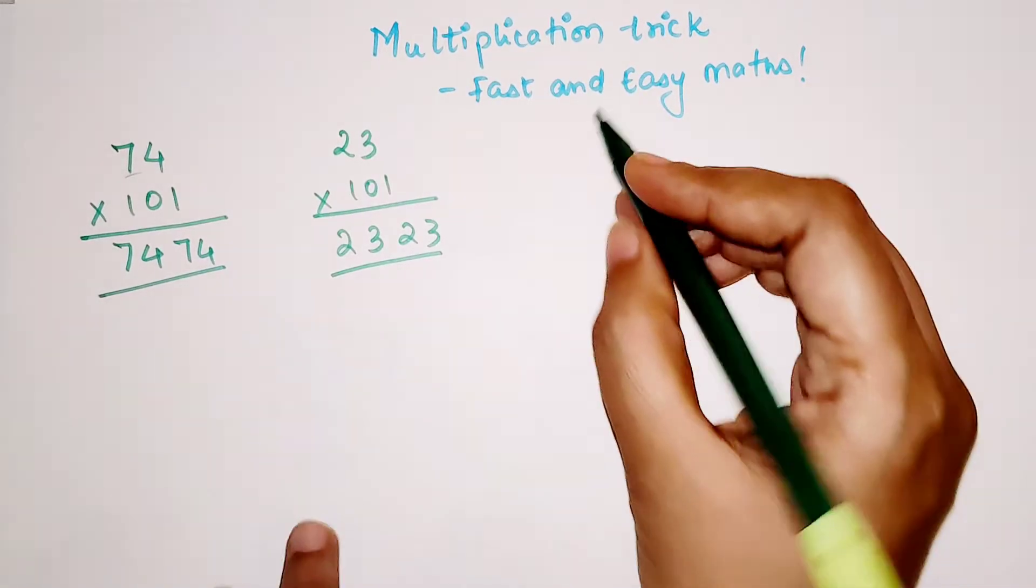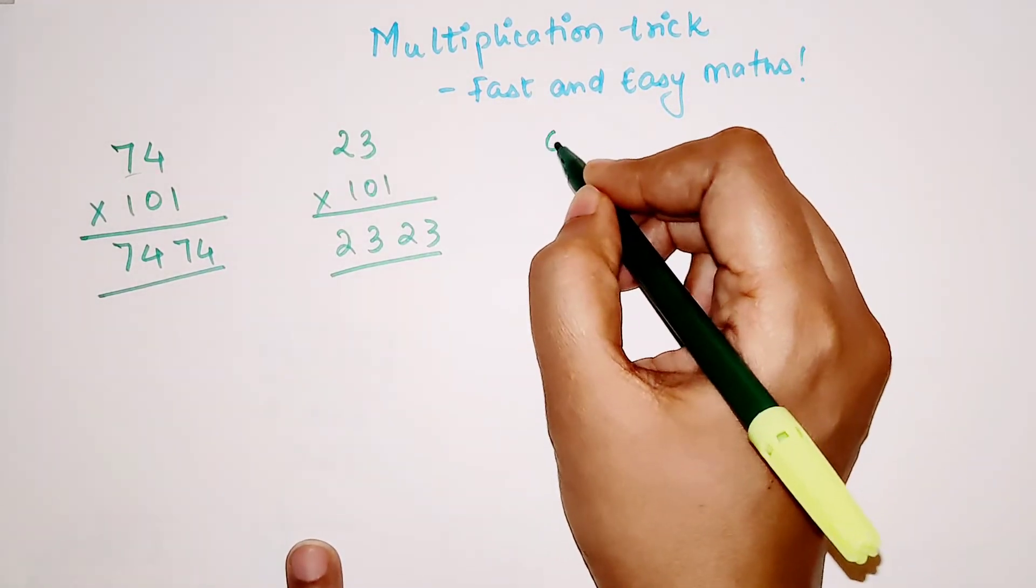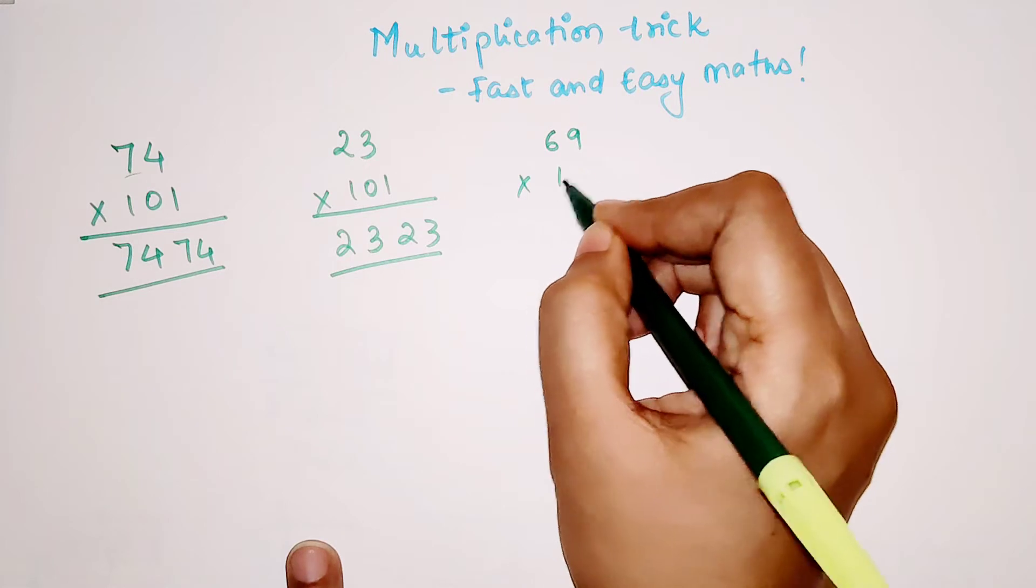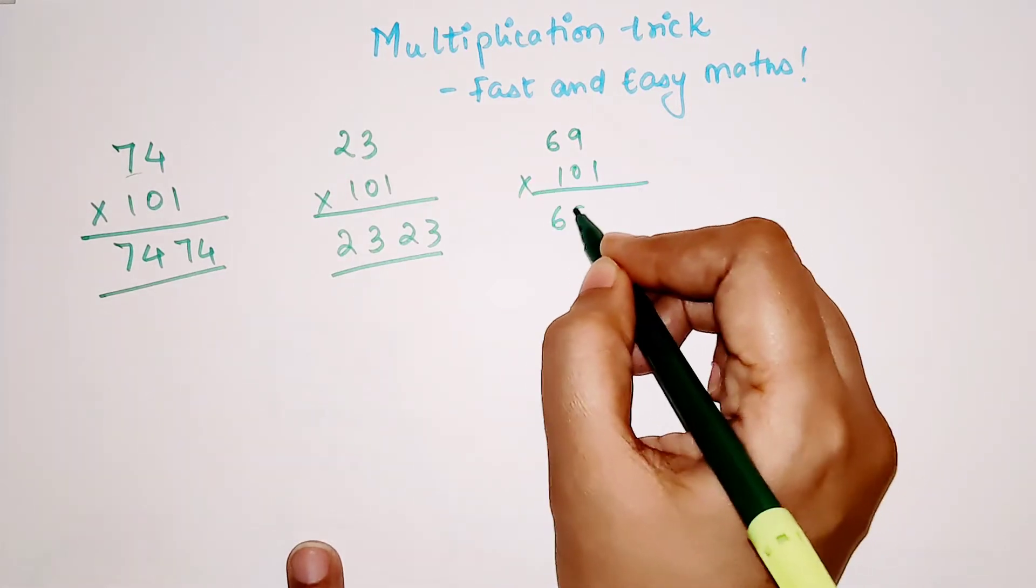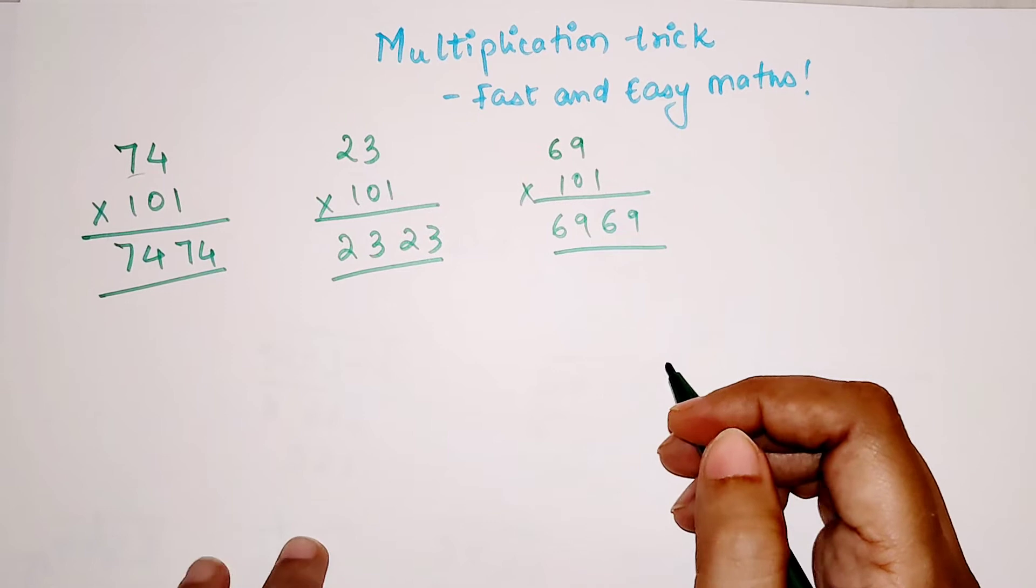I hope you all are getting it. Let's do one more. We can take any number like 69 into 101. Again the answer is 6969. How wonderful is this?